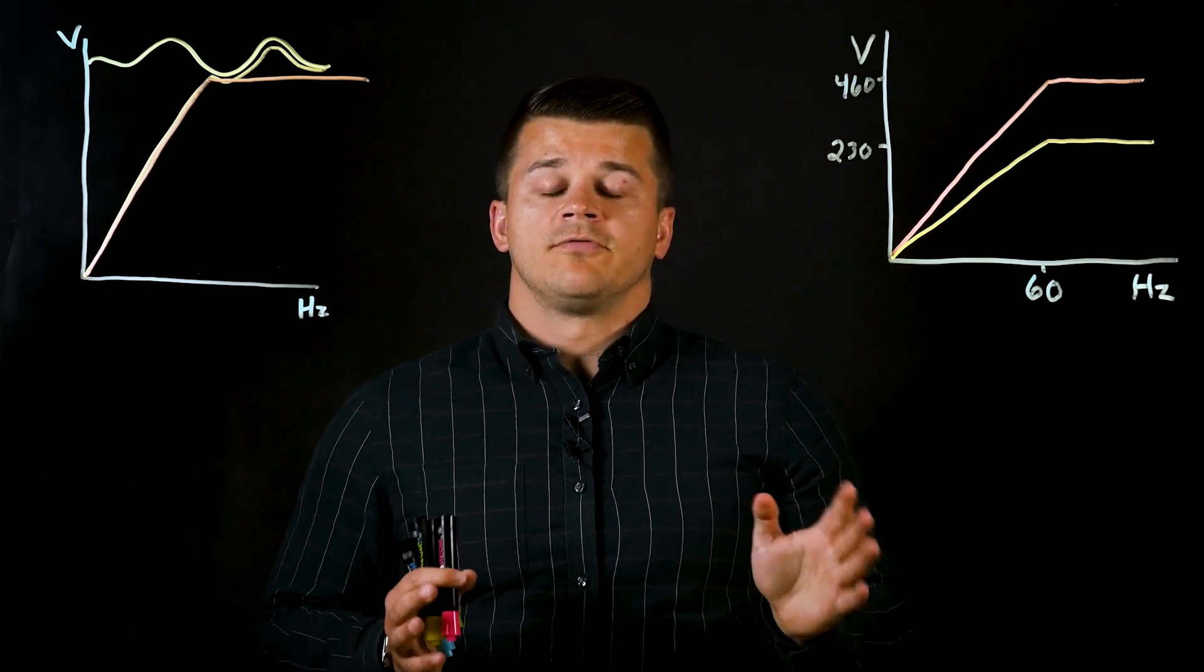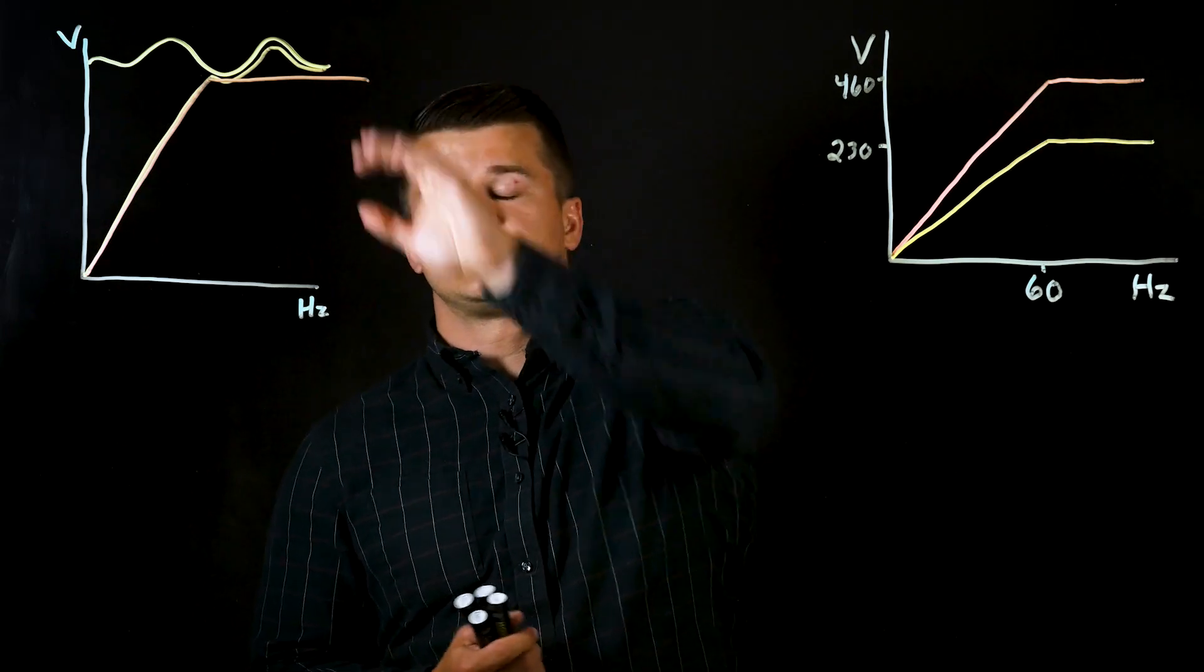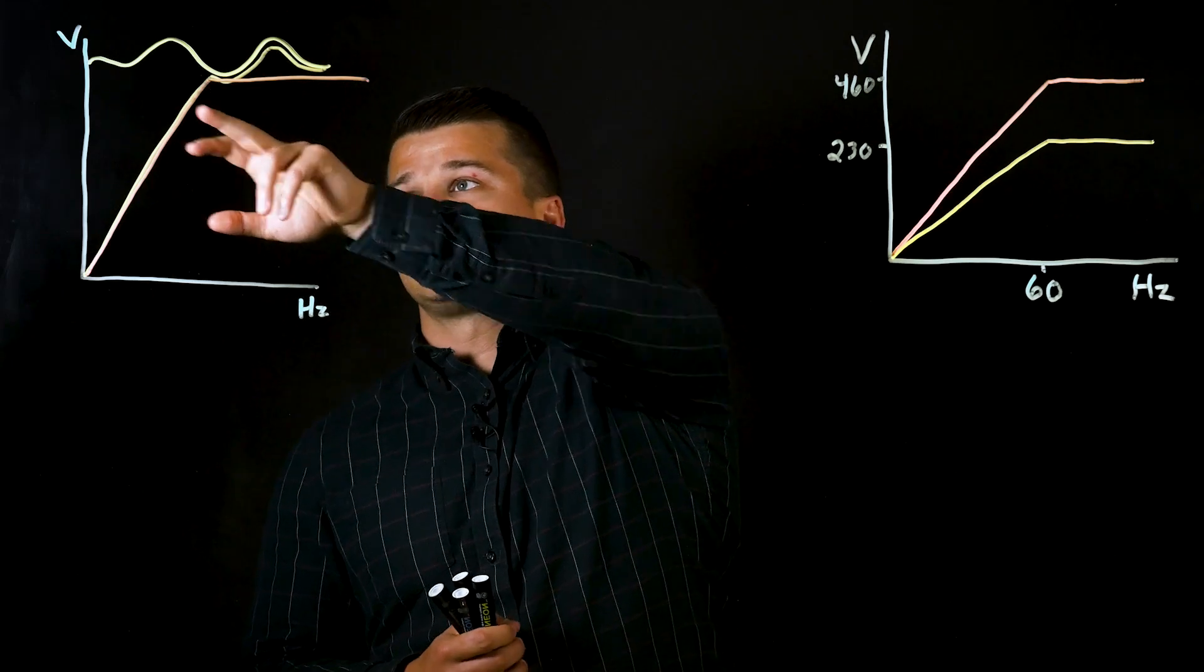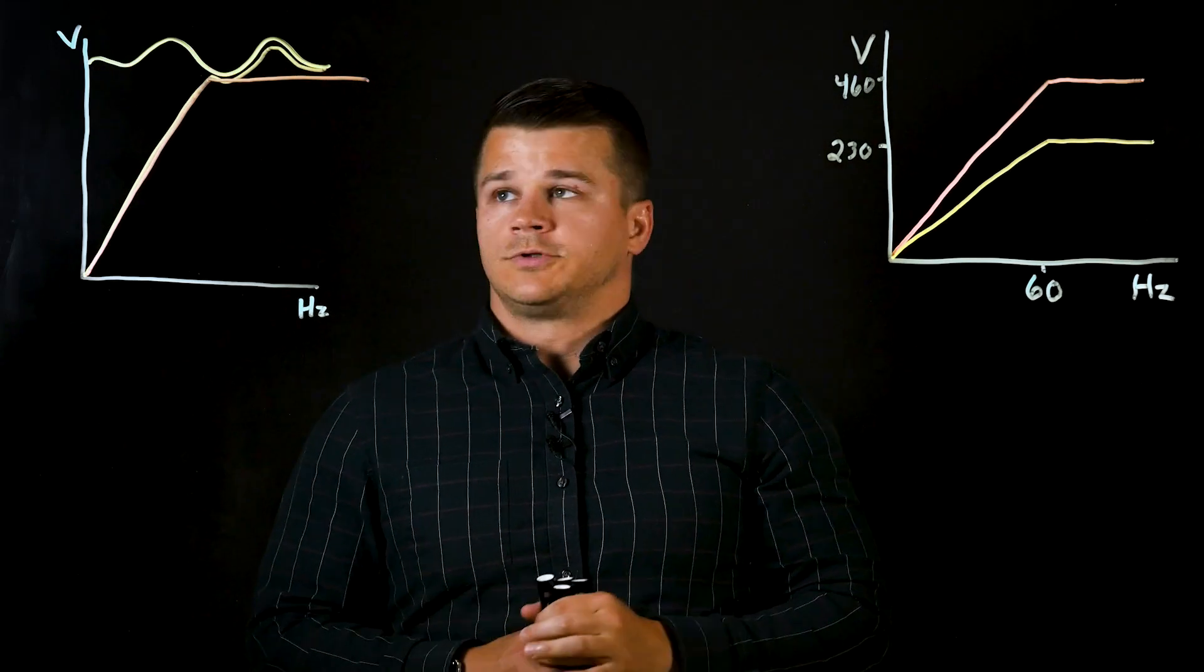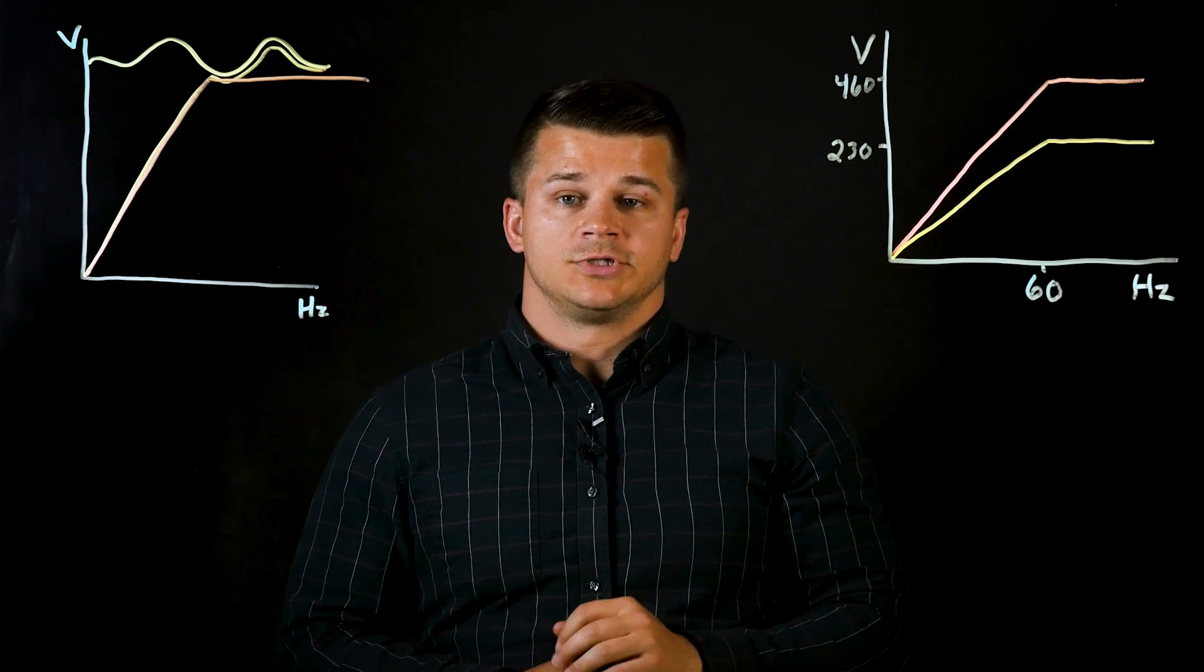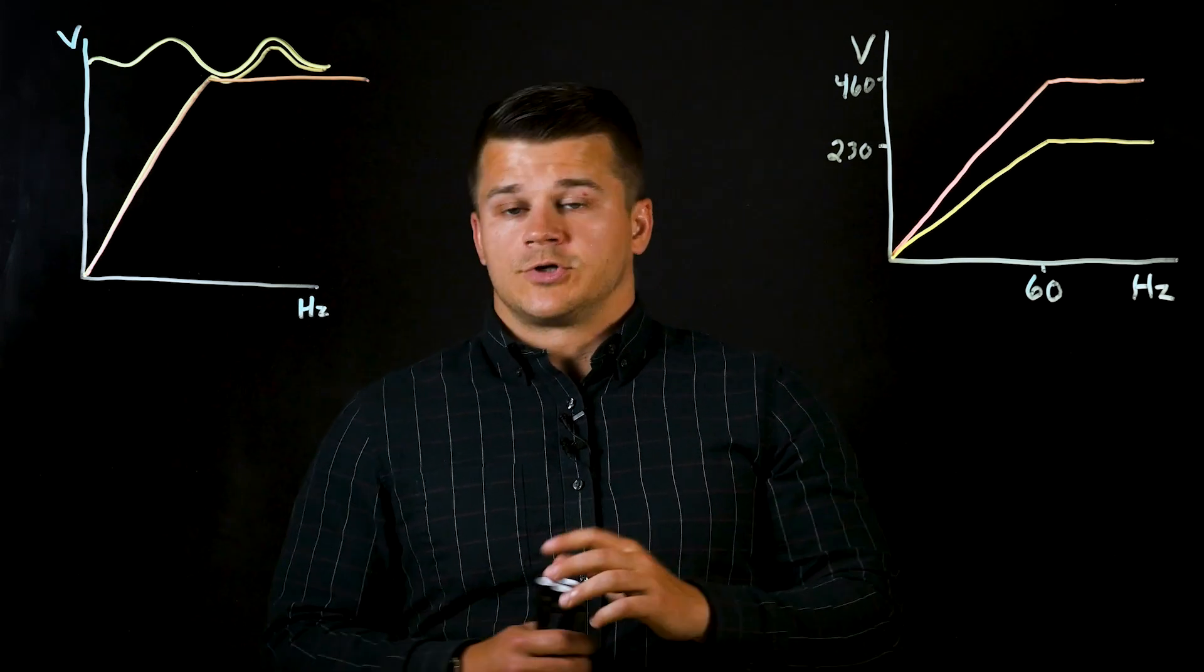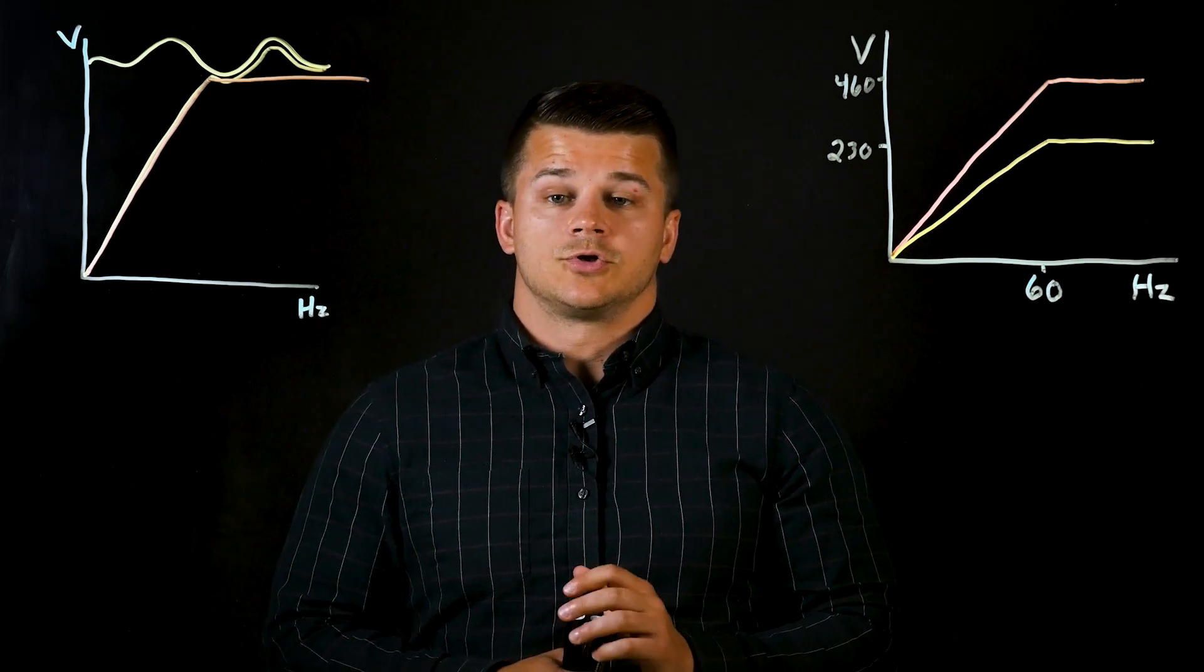Now with the voltage stabilization function activated within the KEB drive, it takes effect once you reach the rated frequency. So if you're running at 60 Hertz and you imagine this is your input rated voltage, without the voltage stabilization your output voltage would simply reflect what your input voltage is to the drive. So it could range anywhere from 420 volts if you have a lagging mains, or if you have a voltage spike up to 528 volts.